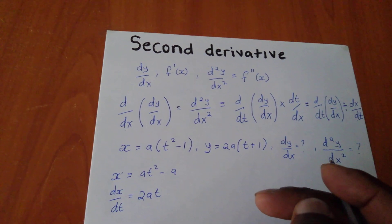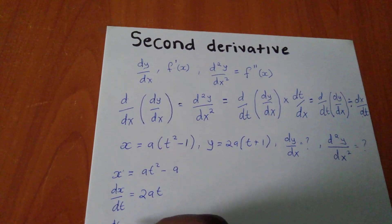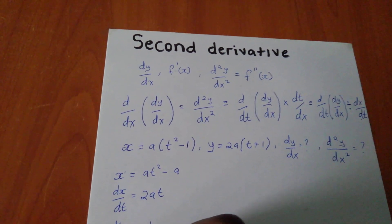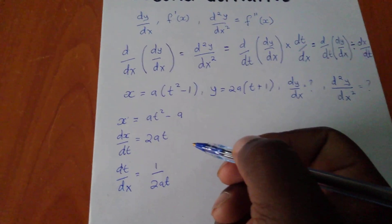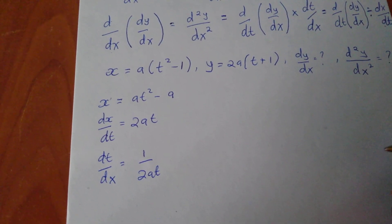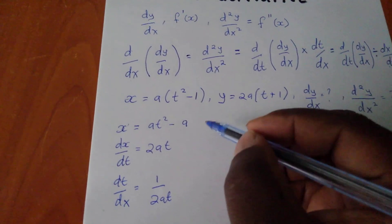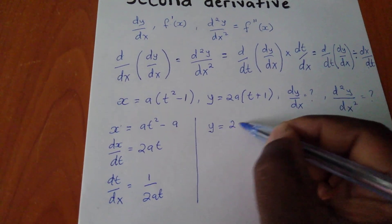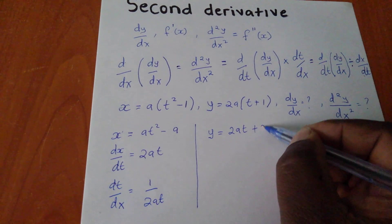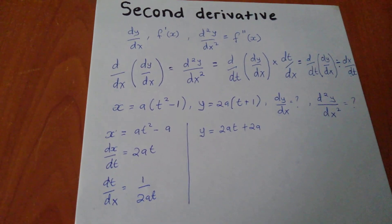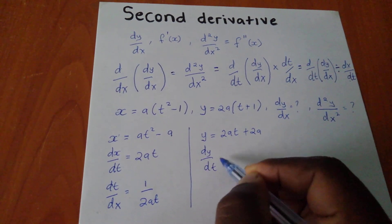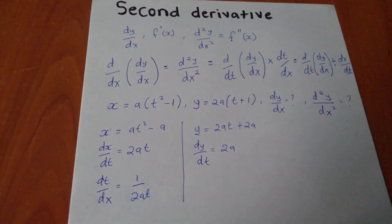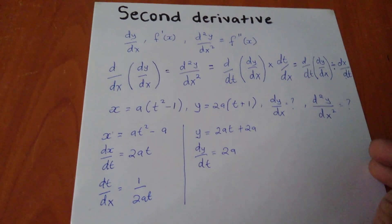Getting my dx/dt, still my dt/dx will be 1 over 2at. So having done that, I have my y. If I try to open the bracket, I'll have 2at plus 2a. If I differentiate it with respect to t, I'll be able to get 2a. So in here will be 0.